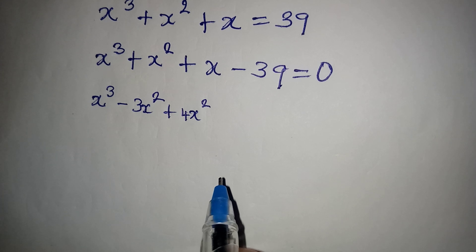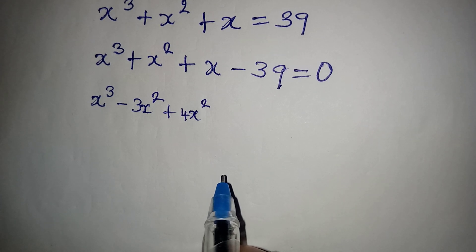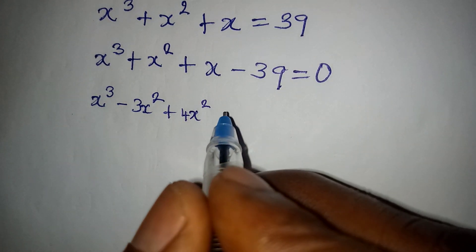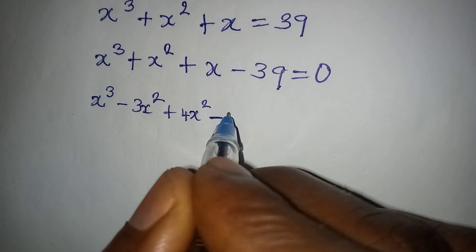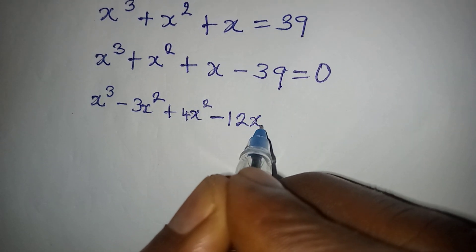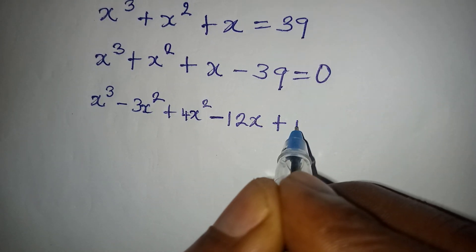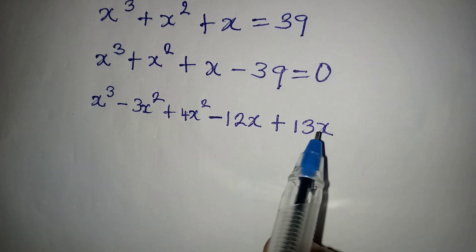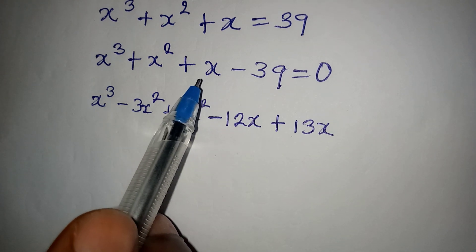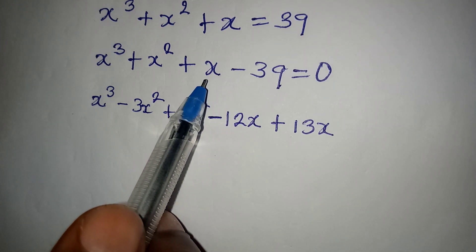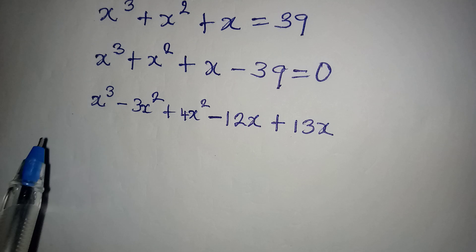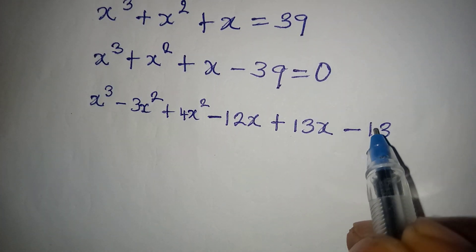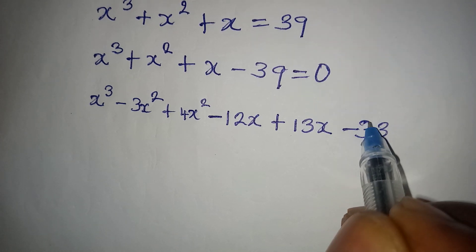For the x term, I'm going to break it into two again: minus 12x plus 13x, because minus 12x plus 13x gives us x. Then we have minus 39, and this equals zero.